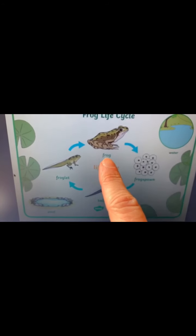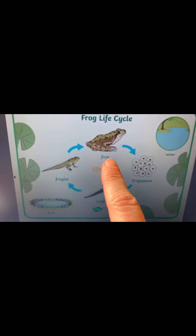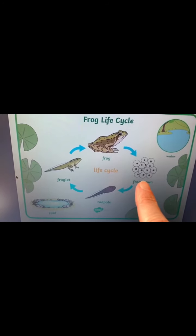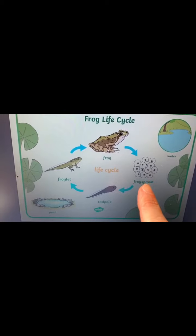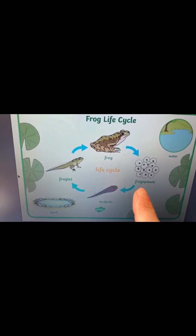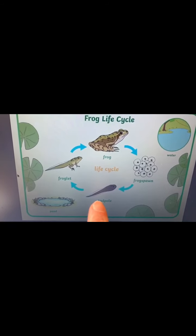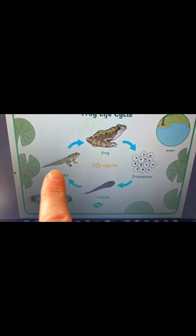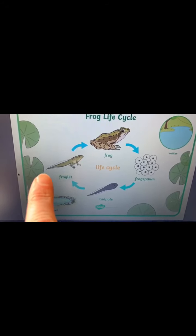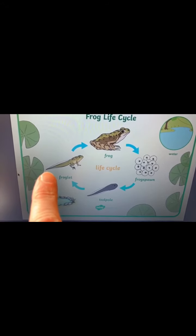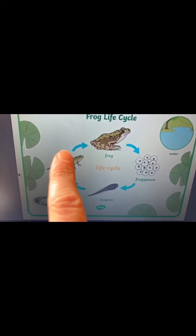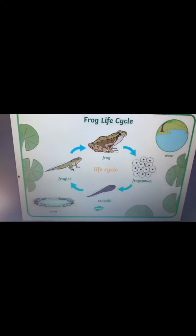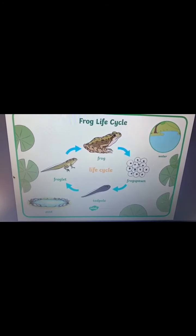And then it starts again. The adult frog then lays their eggs — the frog spawn. The tadpoles then hatch. They grow legs to become froglets, and then they turn into the adult frog.